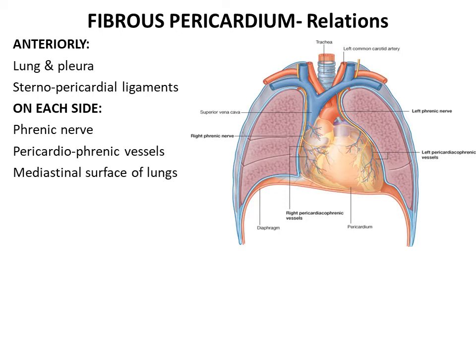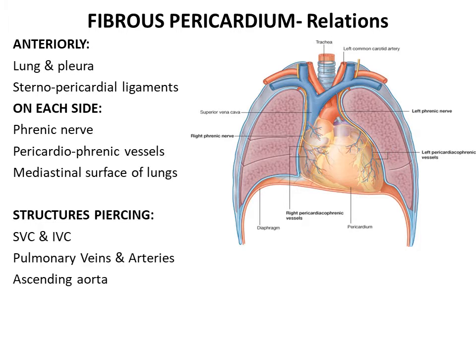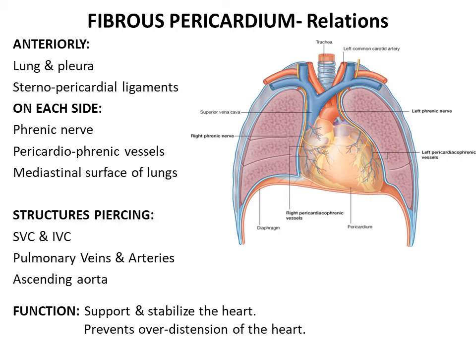Structures piercing the fibrous pericardium are the same as its contents: the arteries and veins which enter or leave the heart — the superior and inferior vena cava, the pulmonary vessels (the two pulmonary arteries and four pulmonary veins), and the ascending aorta. The main function of the fibrous pericardium is to support and stabilize the heart and prevent its over-distension.